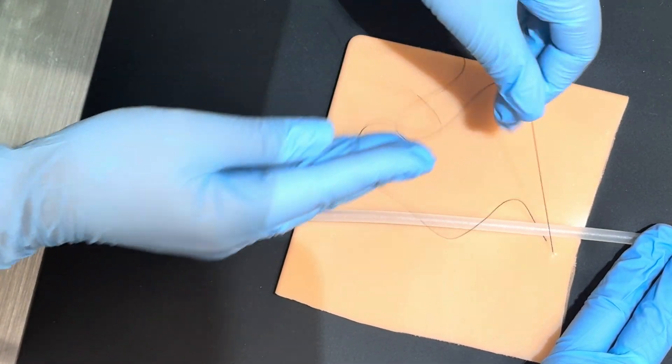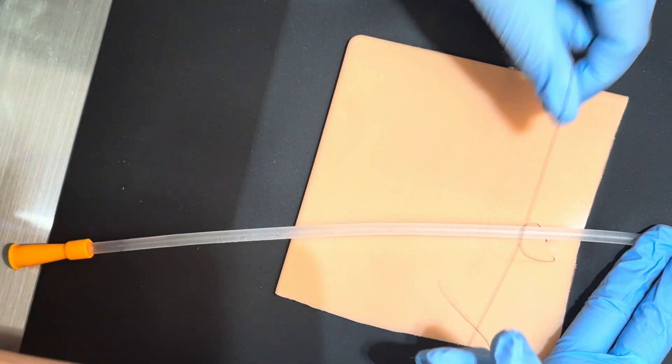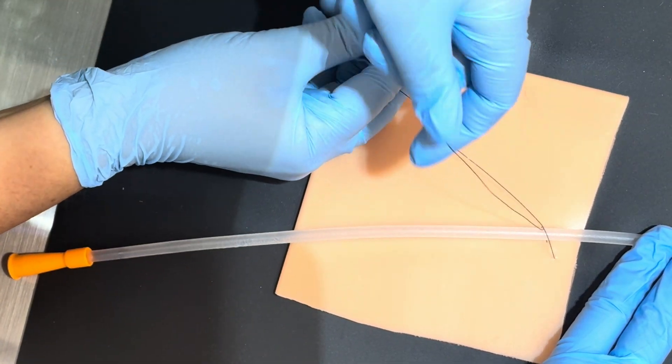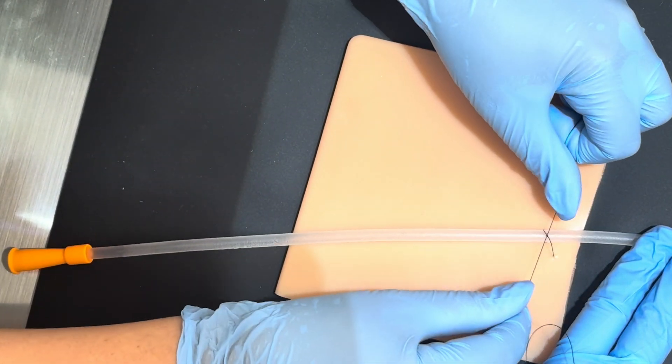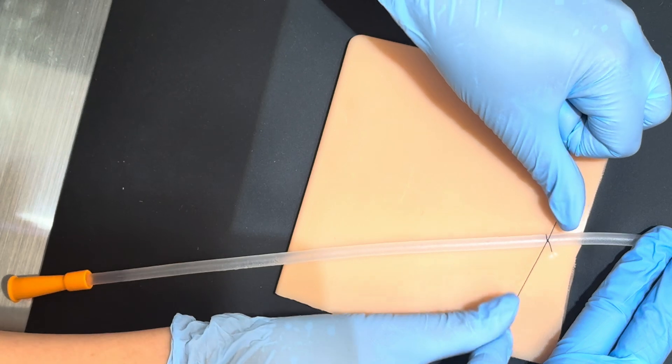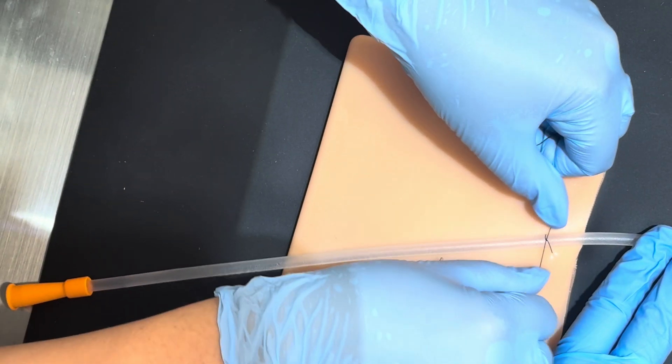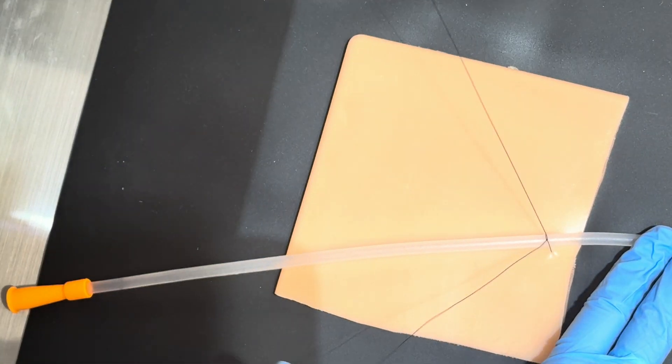I'm going to go ahead and do a square knot using a hand tie on top of this tube. The first one's not very tight, but I'll tighten it up with the second throw. I want this to be tight enough to not let this tube get away from my suture, but I also don't want it to be so tight that it occludes the lumen.